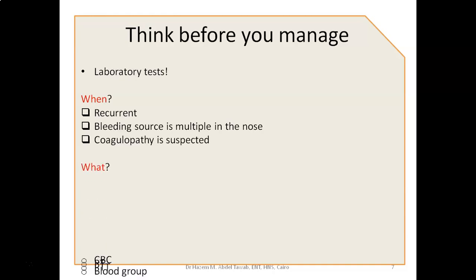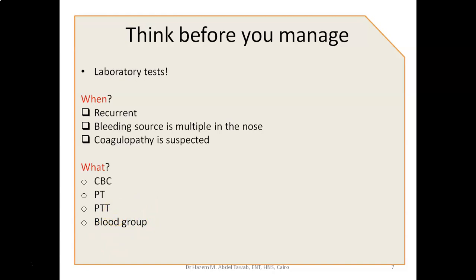You are going to screen with CBC so that you can know the platelet count, know if there is infection by the WBCs, and know if there is anemia by the hemoglobin content. You need to do prothrombin time and partial thromboplastin time, which gives you an idea about the extrinsic and intrinsic pathways. The blood group is also very important, because it will give you a way forward if blood transfusion is needed in cases of severe epistaxis.